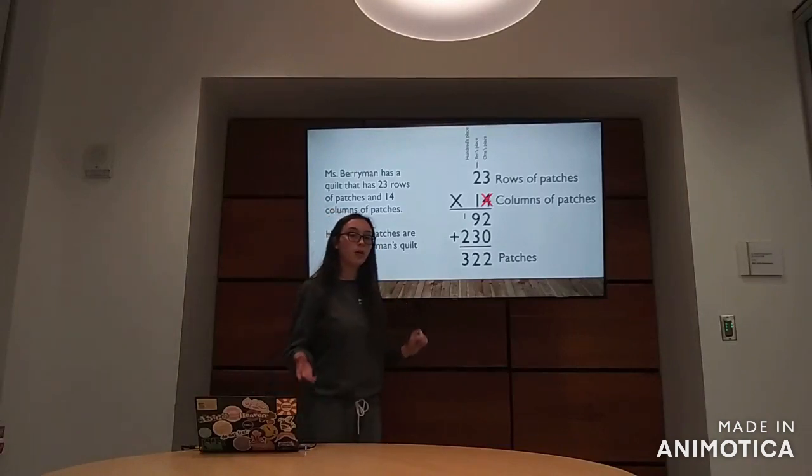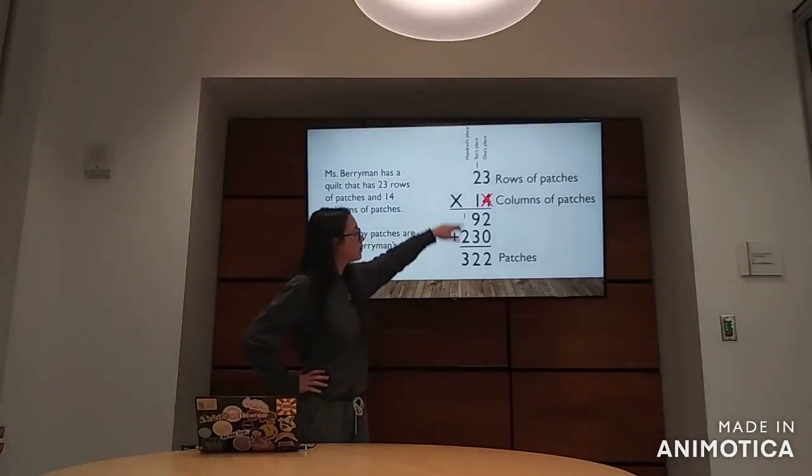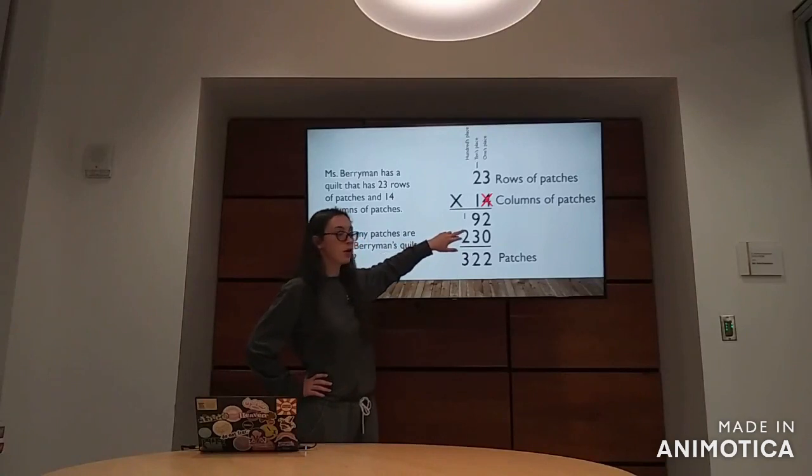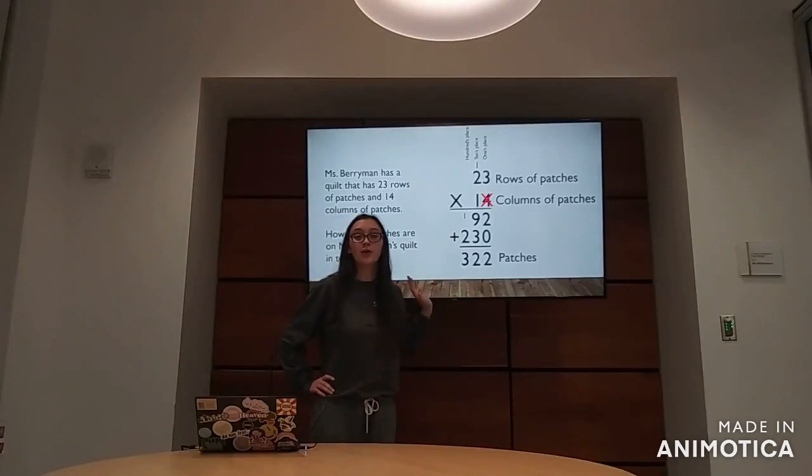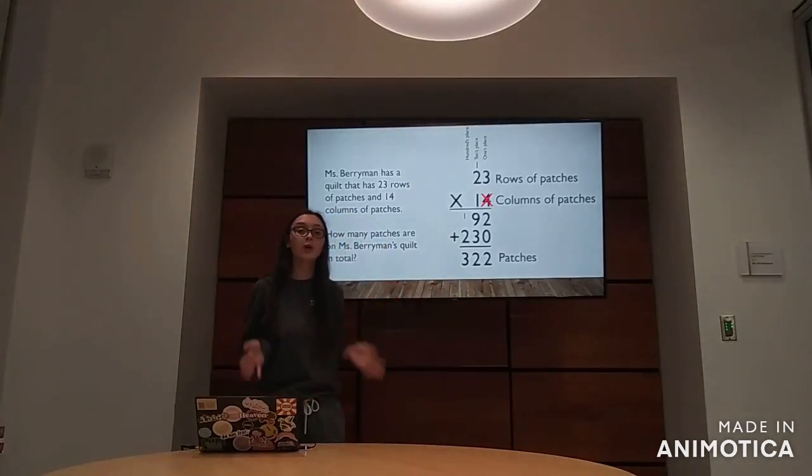And so now we're going to go into the hundreds place and do the addition. So we have two sets of 100 plus one set of 100, and whenever you do 2 plus 1 we get 3. So in total we're going to have 322 patches on our quilt.